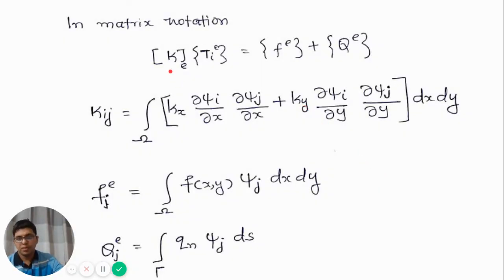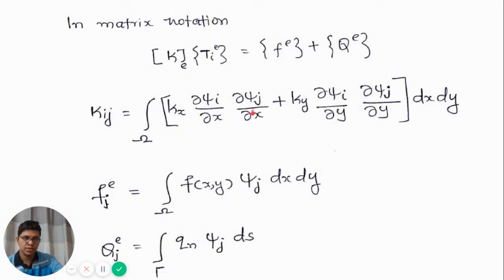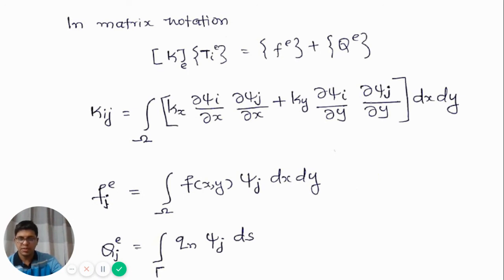In matrix form, the element equation is written as: [Ke] * {T} = {Fe} + {Qe}, where Ke is the element stiffness matrix, T is the nodal temperature vector, Fe is the heat generation term, and Qe is the boundary term. Any element Kij of the stiffness matrix is obtained from: integration over the domain of [kx * dpsi_i/dx * dpsi_j/dx plus ky * dpsi_i/dy * dpsi_j/dy] dx dy. Fje equals the integration over the domain of f(x,y) * psi_j dx dy, and Qje equals the integration over the boundary of qn * psi_j * ds. In the next presentation we will discuss an example using this equation. Thank you.